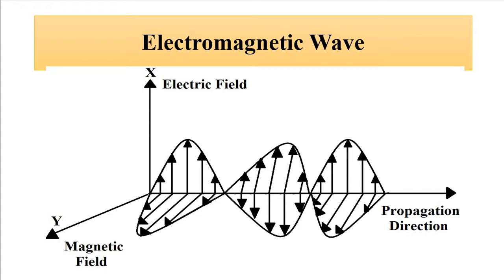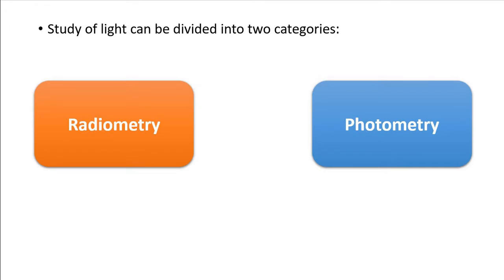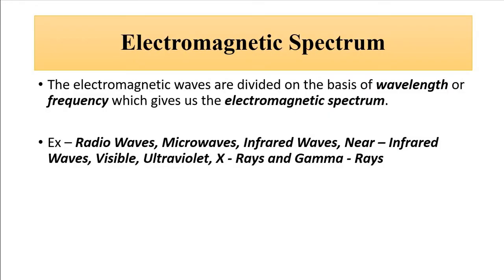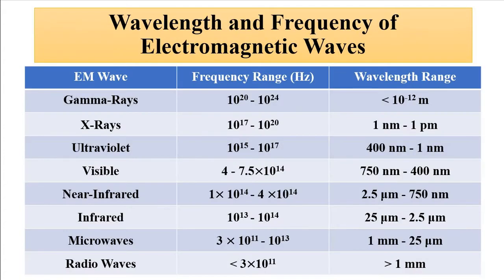The study of light is basically divided into two categories: radiometry and photometry. Before we go into radiometry and photometry, let us refresh our concepts related to the electromagnetic spectrum. In the electromagnetic spectrum, electromagnetic waves are divided and demarcated on the basis of their wavelength or frequency, giving us a categorized electromagnetic spectrum based on wavelength range or frequency range.